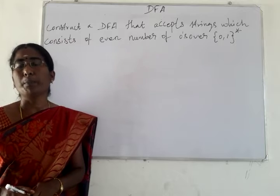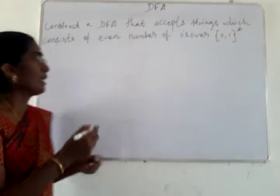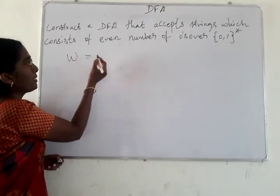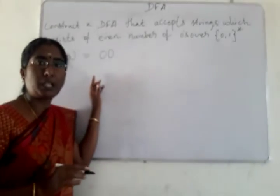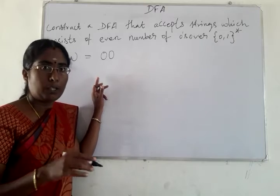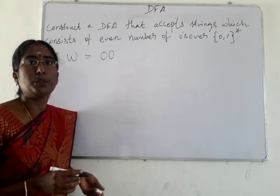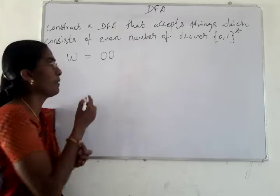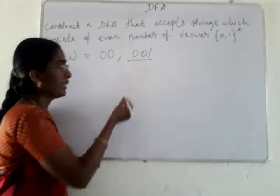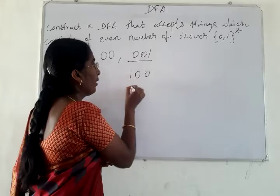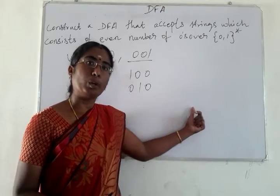What will be the minimum string for this DFA? The minimum string that consists of an even number of zeros is '00', with length equal to 2. If we want a string of length 3 with an even number of zeros, that is '001', which can be written in any form — '100' or '010'. In any sequence, the total must consist of an even number of zeros.